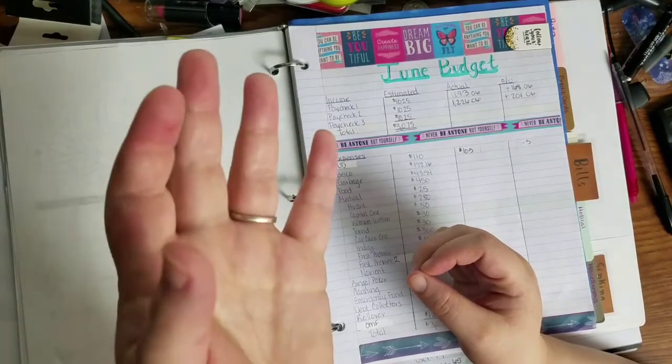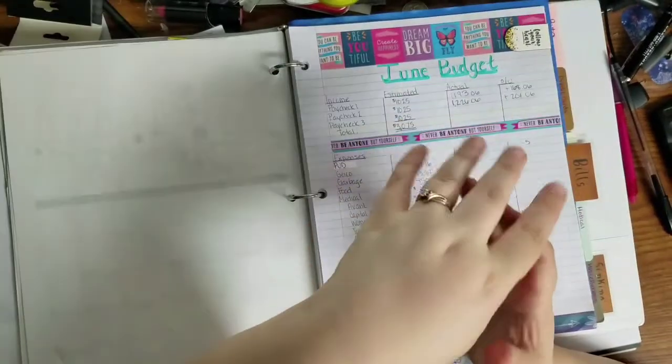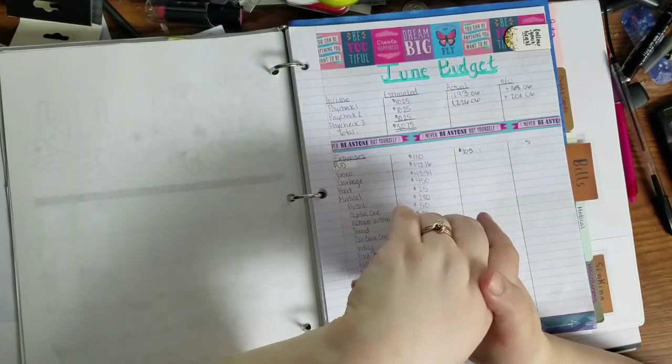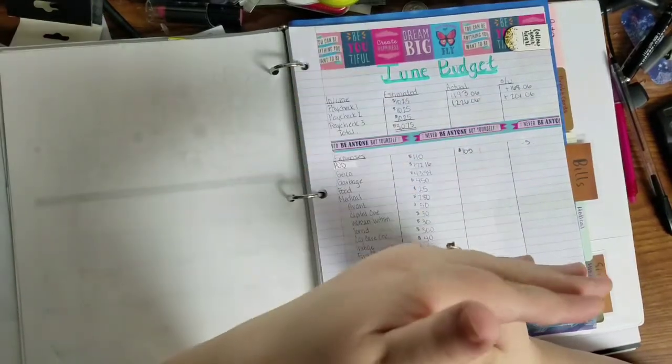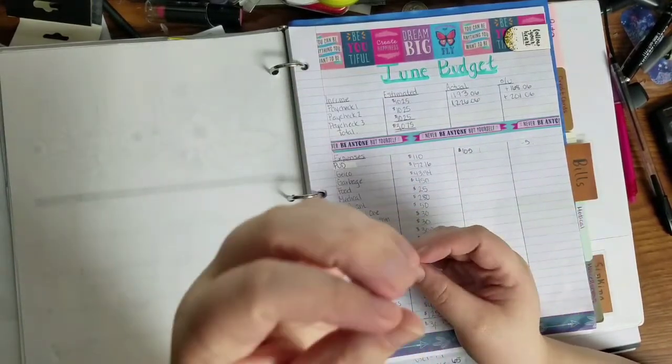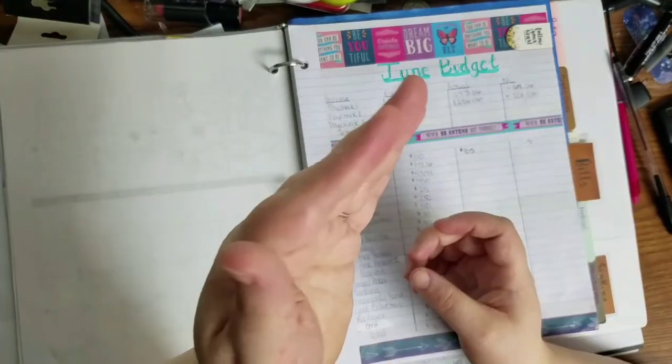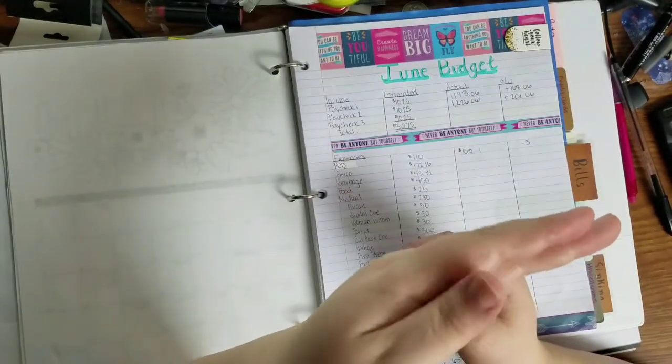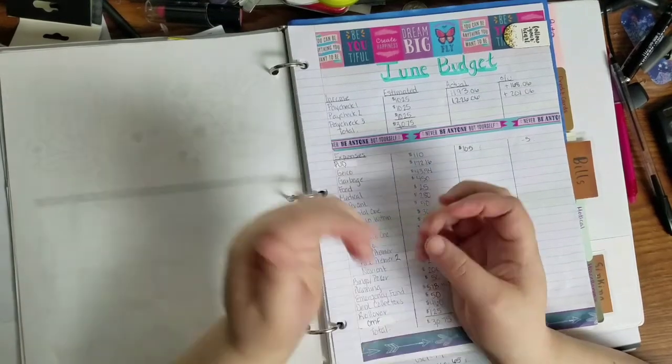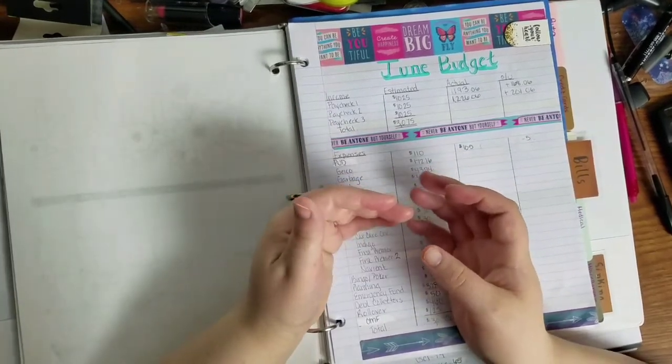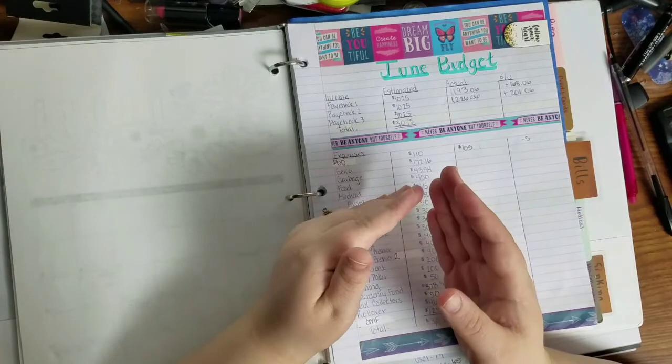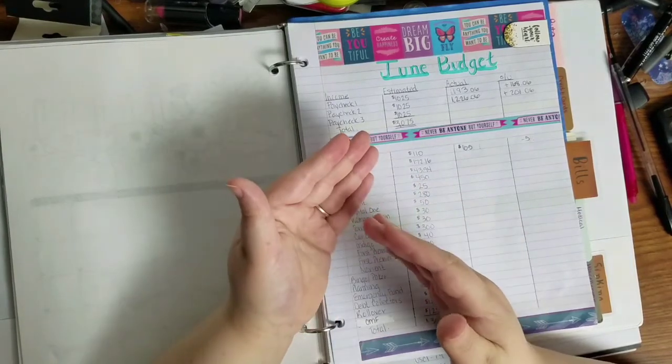I did go online and I was able to go ahead and change my deposit amounts into my Bank of America and my Capital One. Bank of America requires a minimum of $250 a month, so I was getting $400 a paycheck but I dropped that down to $300.